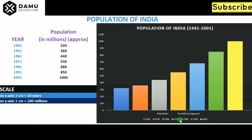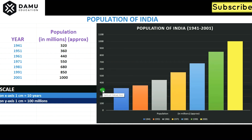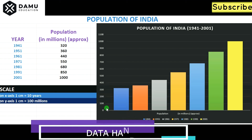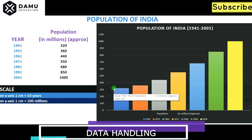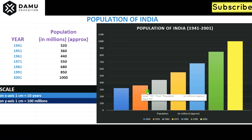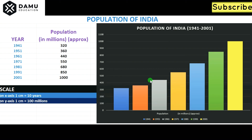On the x-axis, start with one centimeter spacing. For 1941 that is 320 millions — after 300, take 2 units, since each division represents 10 millions. For 1951, construct up to 360 — that is 6 units after 300. Then 1961 is 440 — after 400, take 4 units.